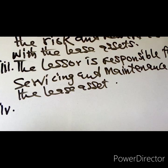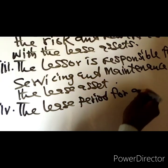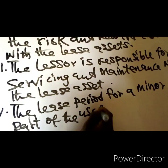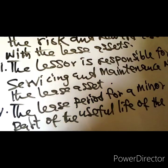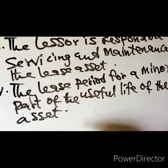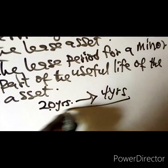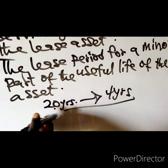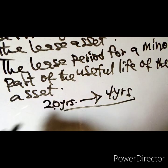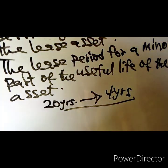Number four: the lease period forms a minor part of the useful life of the asset. Remember in the case of finance lease the lease period forms a major part, so if it forms a minor part, the useful life may be twenty years and the lease period may be four years — where you have it like this, it is an operating lease. That four years is minor compared with the twenty years.